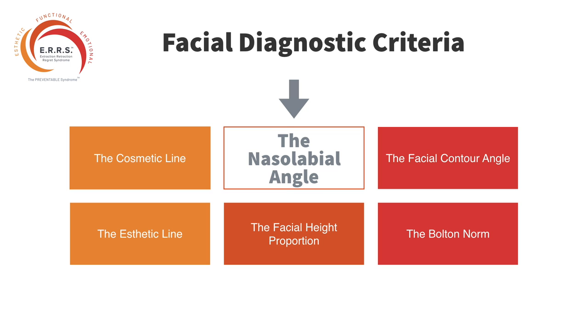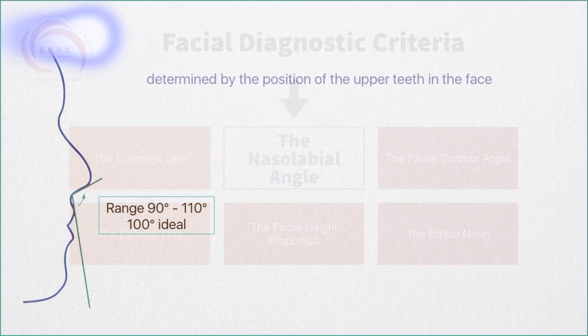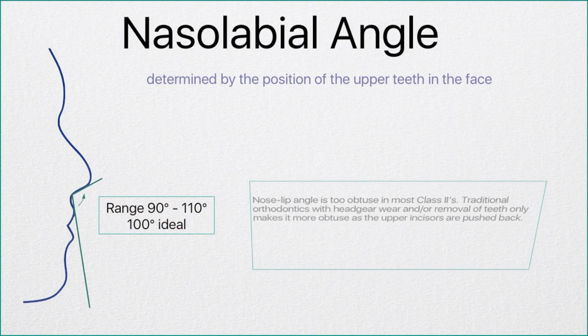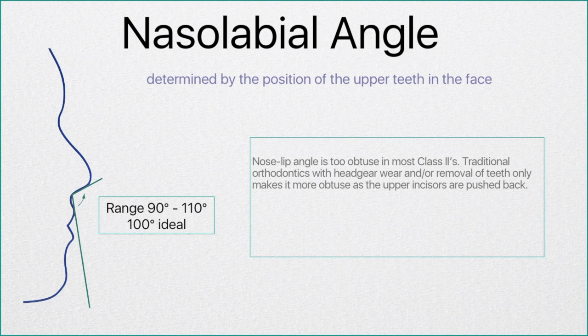Welcome back. This segment is entitled Diagnostic Criteria: Nasolabial Angle. Here is the nasolabial angle. In an ideal situation it would be around 100 degrees, and the range of normal is considered from 90 to 110.